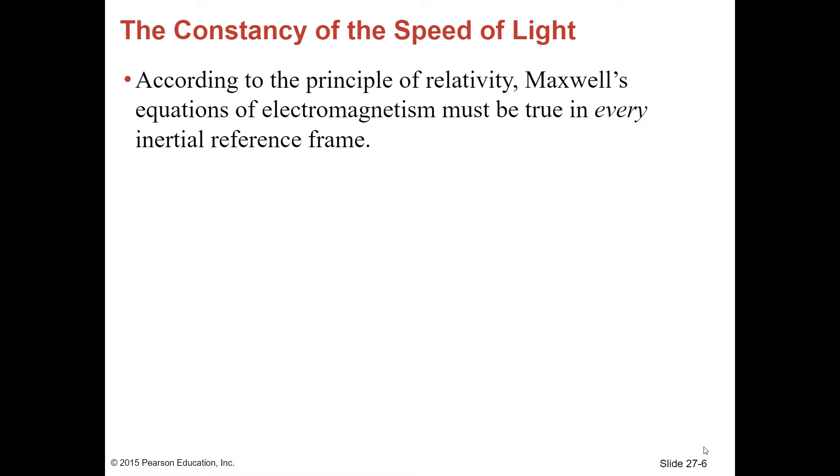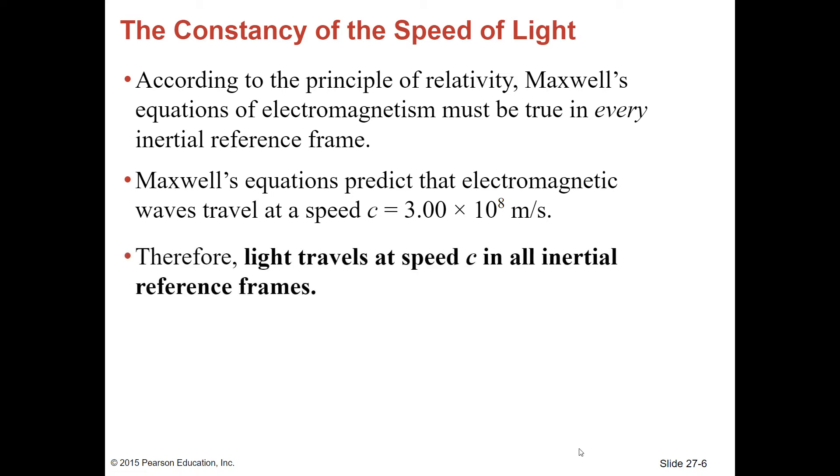The constancy of the speed of light. Maxwell's equations predict that electromagnetic waves travel at the speed of light, 3.00 times 10 to the 8 meters per second. Therefore, light travels at this speed in all inertial reference frames.